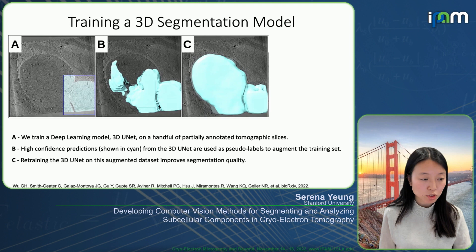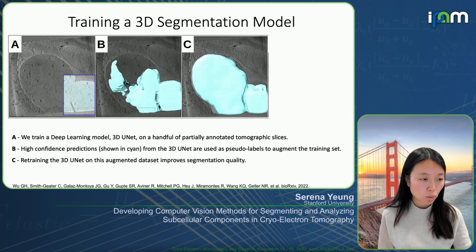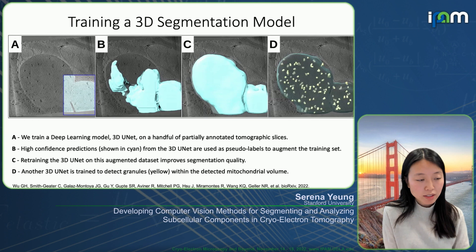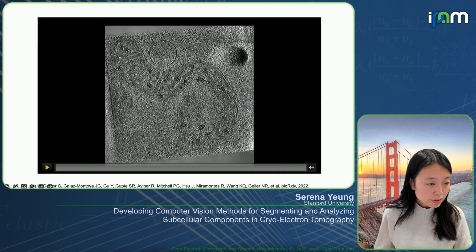The retrained 3D U-Net is able to produce significantly improved segmentation quality over just the first stage. These are 3D volumetric segmentations shown overlaid on a 2D slice image. We did this process for both the mitochondria and the 3D granules, and at the end we obtain pretty accurate mitochondrial segmentation as well as granule segmentation, all in 3D. The movie shown here goes through the 3D volume along with the predictions and segmentations obtained.